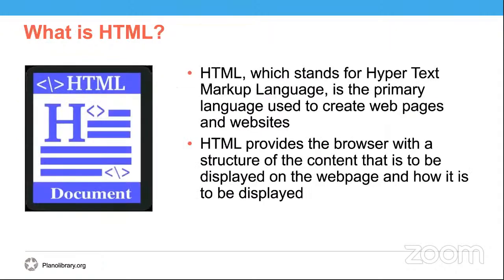Now that we have a basic understanding of the different layers of a webpage, let's define what HTML is. HTML stands for Hypertext Markup Language. It's used to create webpages and websites. HTML is not a programming language; rather, it is a markup language. A markup language annotates a document to control the layout of the page. So HTML tells the browser what is on the page, such as a heading or a paragraph, so it provides that structure. When an HTML document loads in a browser, the browser reads the document line by line, starting from the top all the way down to the bottom.